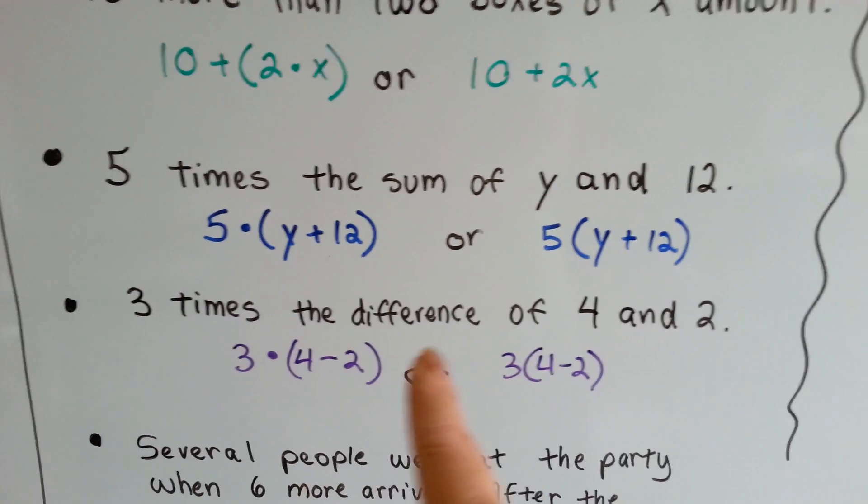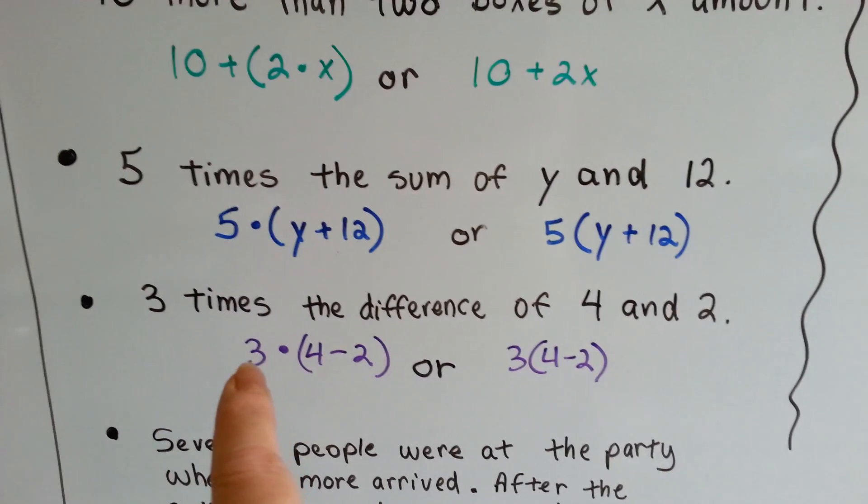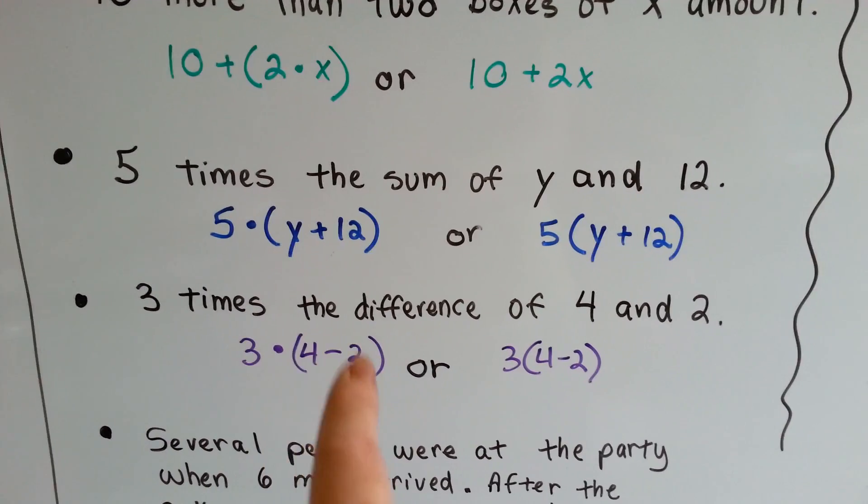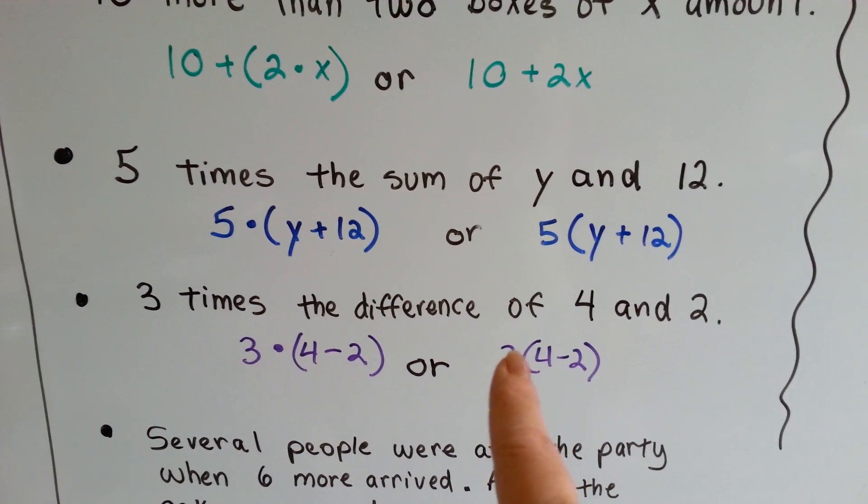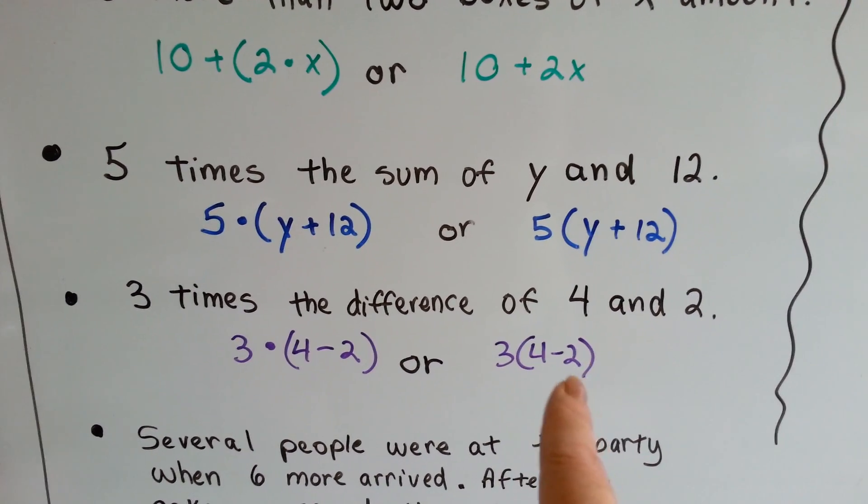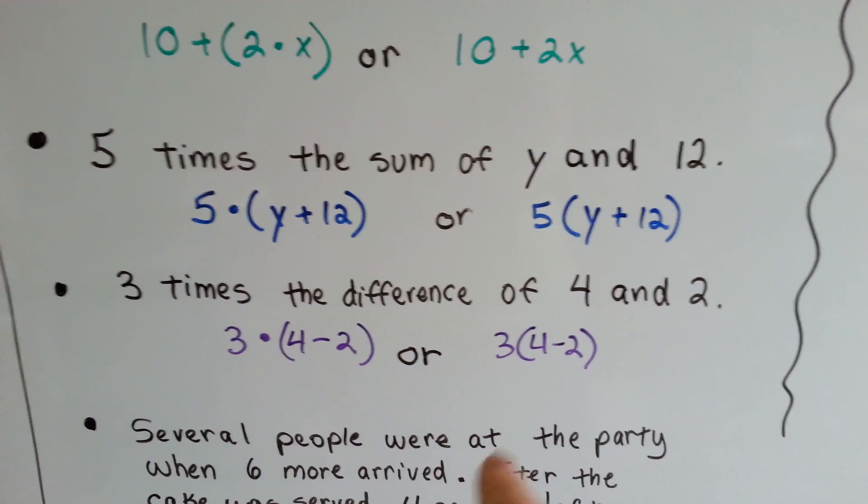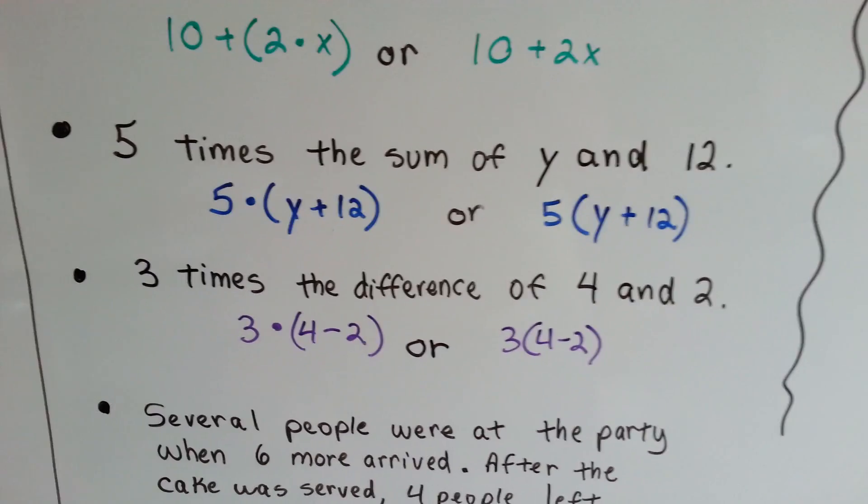If you saw 3 times the difference of 4 and 2, then that means it's 3 times 4 minus 2. So you do the 4 minus 2 first. You would also see 3 next to the parentheses, 4 minus 2. That's going to be the one you see most often. I don't see the dot used very often.